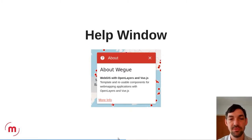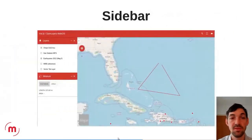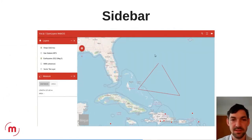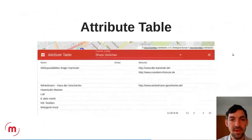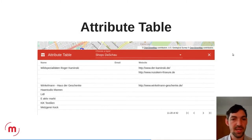There is a help window where you can easily add your own content with text and links. You can click on features and get an information popup. You can add your own components or modules to either the toolbar or the sidebar — configurable in the configuration file. There is also an attribute table for vector layers where you can scroll through the layers and click on a row to jump to the respective feature on the map.